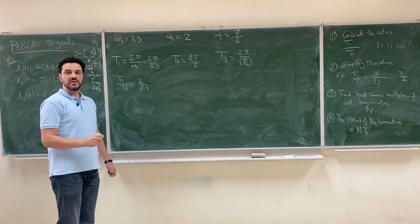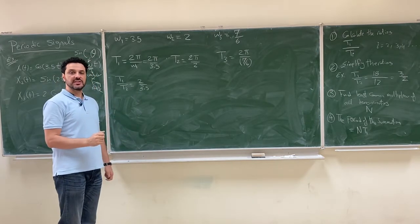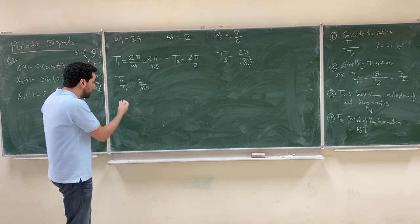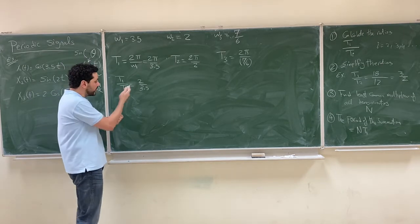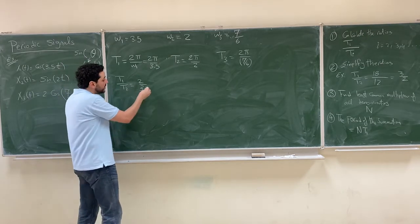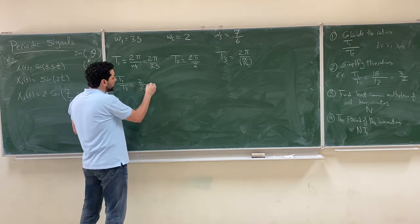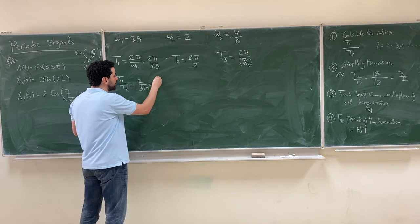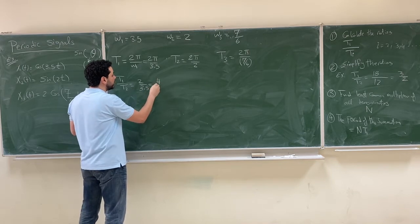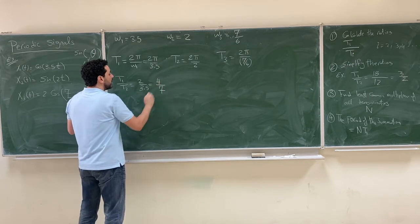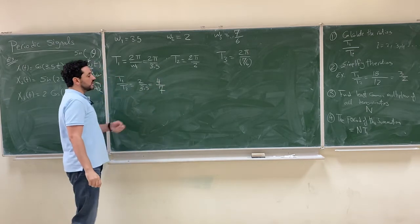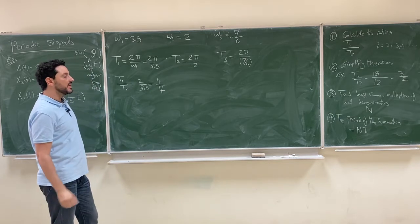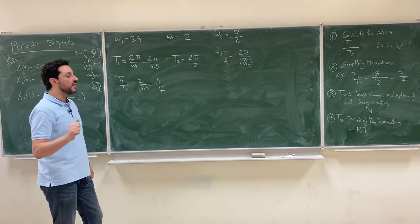The ratio 2/3.5 is not immediately a ratio of integers, but we can convert it by multiplying numerator and denominator by 2, giving 4/7. So this is a ratio of integers — good news so far.